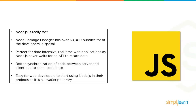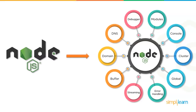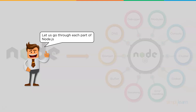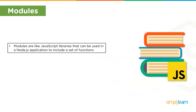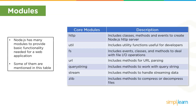Let's familiarize ourselves with the parts of Node.js. First up, we have modules. Modules are like JavaScript libraries used in a Node.js application to include a set of functions. We can use the require() function to include a module. Node.js has many modules providing basic functionality, some of which include http, util, fs, url, querystring, stream, and zlib.